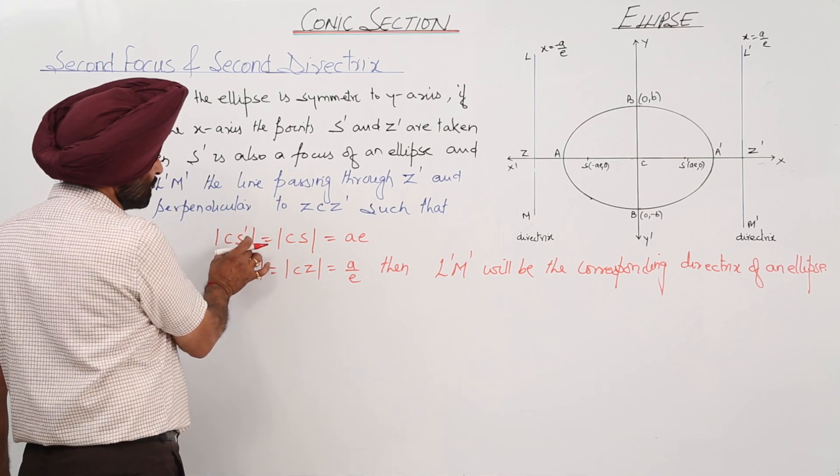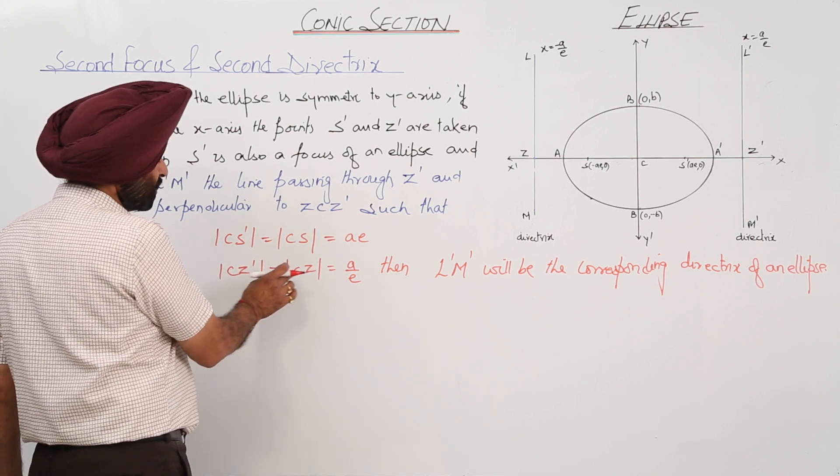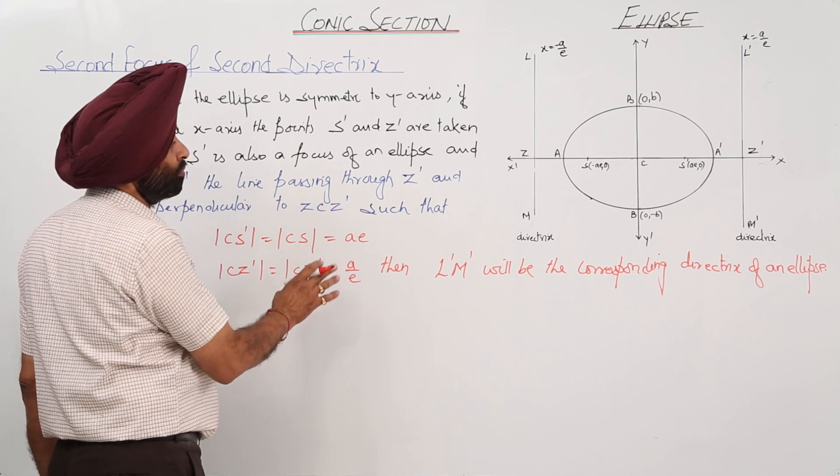So, distance between CS dash and CS is equal to Ae. And CZ dash and CZ is equal to A upon E.